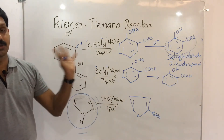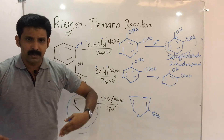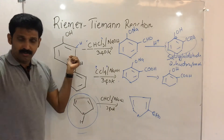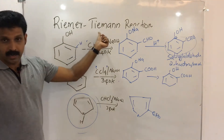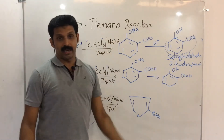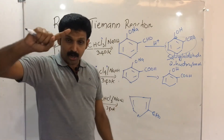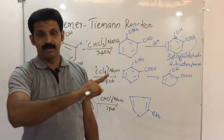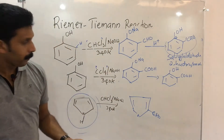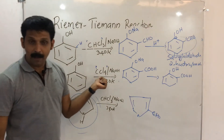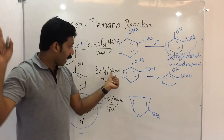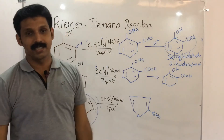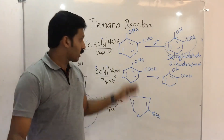When phenol is treated with chloroform and NaOH at 340 Kelvin, and the product is acidified, we will get salicylaldehyde. Or, when phenol is treated with carbon tetrachloride and NaOH, and the product is acidified, we will get salicylic acid. These are the two definitions and examples of the Reimer-Tiemann reaction.